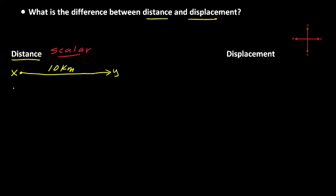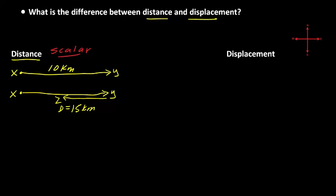Let's take a look at another situation. Suppose you started at point X, our origin, and traveled all the way to point Y. Then you turned around and came halfway back, stopping at point Z. The distance you traveled was 10 kilometers to Y and 5 kilometers halfway back, placing you at a total distance of 15 kilometers — that is the total length of the path traveled between the origin and your final destination, point Z.